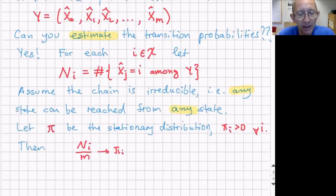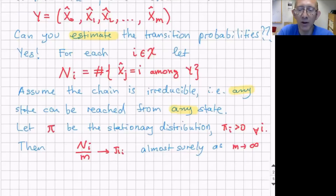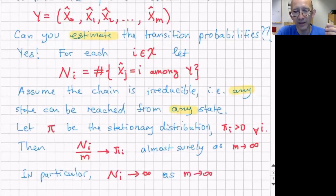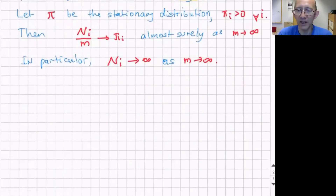As a result, N_i divided by the total number m+1 converges to pi_i as m goes to infinity — almost surely, which is a stronger concept of convergence than we covered in this course, but in particular it implies convergence in probability. Because pi_i is strictly positive, the number of elements in the sequence equal to i will grow to infinity, so you'll have more and more observations equal to i.